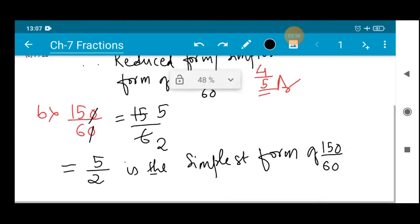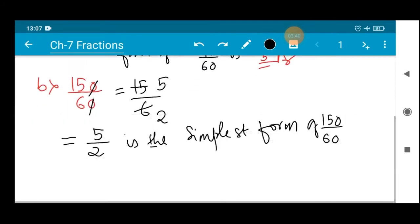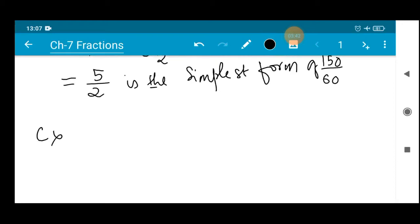150 by 60 we have cut and converted into the simplest form, that is 5 by 2. The last number C we have is 84 divided by 98. Let's do it. 84 divided by 98. Let's choose the smallest number, that is 2, to cut both the numbers.